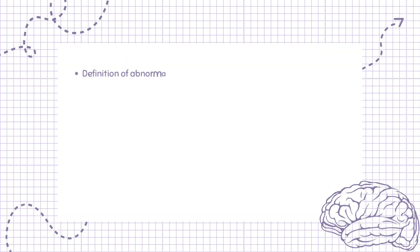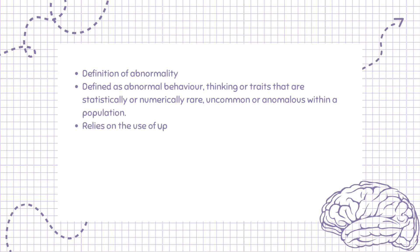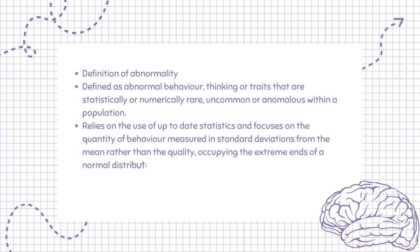Statistical infrequency is a definition of abnormality, defined as abnormal behavior, thinking or traits that are statistically or numerically rare, uncommon or anomalous within a population. It relies on the use of up-to-date statistics and focuses on the quantity of behavior measured in standard deviations from the mean rather than the quality, occupying the extreme ends of a normal distribution curve.